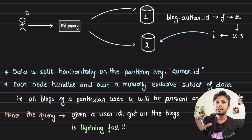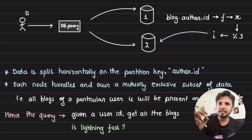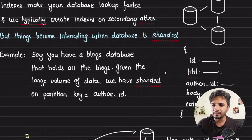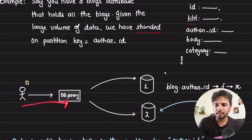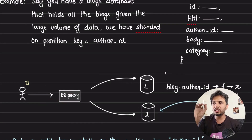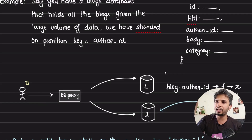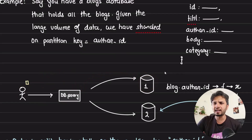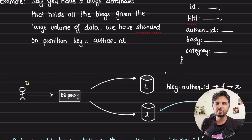Things become interesting when we're looking for something specific. Say I want to get all the blogs for a given user_id. The flow is straightforward: given a user_id (which is also the author_id, our partition key), I pass it through the hash function, go to the resulting node, and fire a query — SELECT * FROM blogs WHERE author_id = X. I get all the blogs for that user and send them back. This works like a charm because we're querying on the partition key itself.